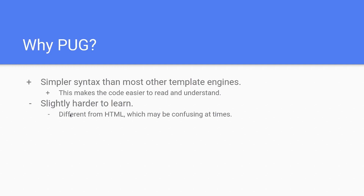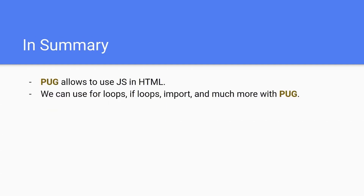Why are we using Pug? It provides simpler syntax than most other template engines. There are many other template engines including Handlebars and EJS, but this one makes the code easier to write and understand, and uses fewer lines of code. The downside is it's slightly harder to learn — it has its own special features including includes, and its own syntax is more different from HTML which may be confusing at times. In summary, Pug allows us to use JS in HTML. We can use for loops, if loops, imports and much more with Pug. We will not be showing the syntax in this video but will show it when we make the dashboard. The link to the docs is in the resources section below.